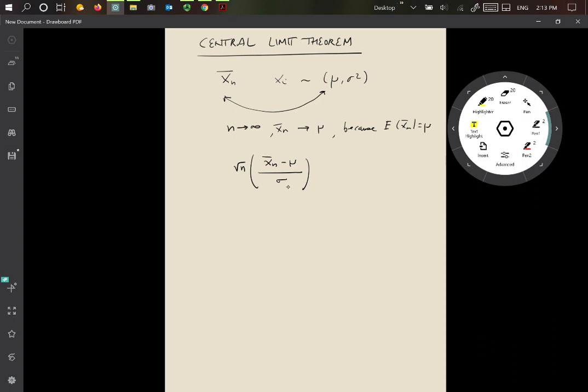So this quantity can be thought of as essentially normalizing x̄ₙ. So x̄ₙ minus μ says, I'm going to subtract off the mean from it, the population mean from it. So this is going to center the variable numerator to be centered around 0.